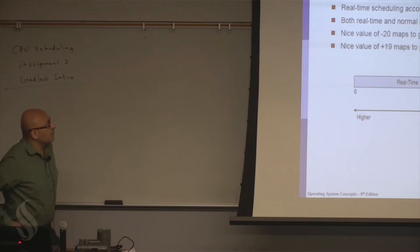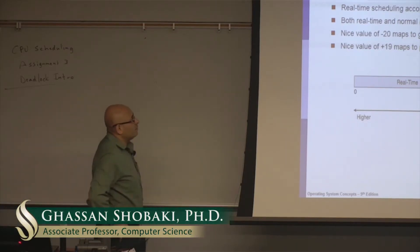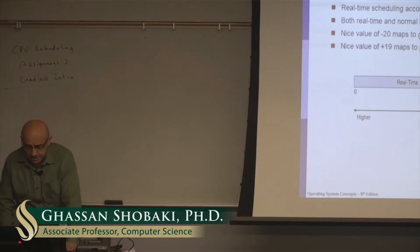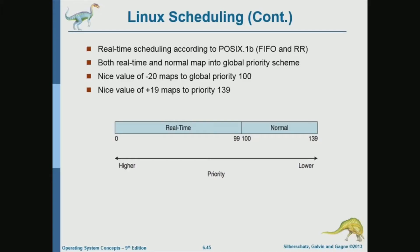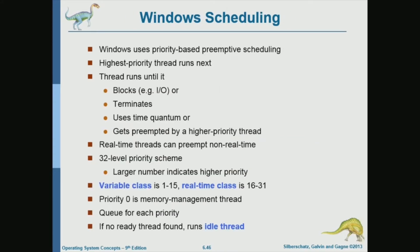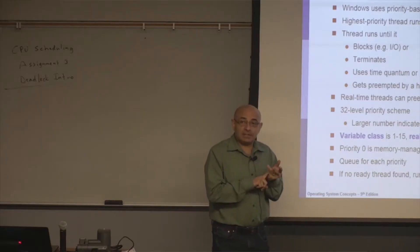Last time we talked about Linux scheduling and the completely fair scheduling algorithm that is used to schedule normal processes, while real-time processes have higher priority. Then we started talking about Windows scheduling. In principle, Windows scheduling is similar. There are two main characteristics of the scheduling algorithm that are the same: priority-based and preemption.